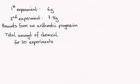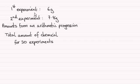Hi. For this question, we're told that Sarah uses 6 grams in the first experiment, 7.8 grams in the second experiment, and the amounts form an arithmetic progression. We've got to find the total amount of chemicals she uses for 30 experiments.